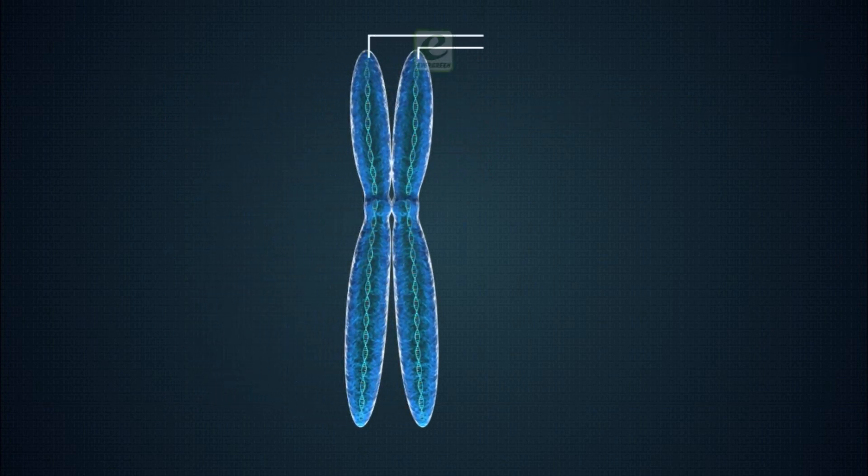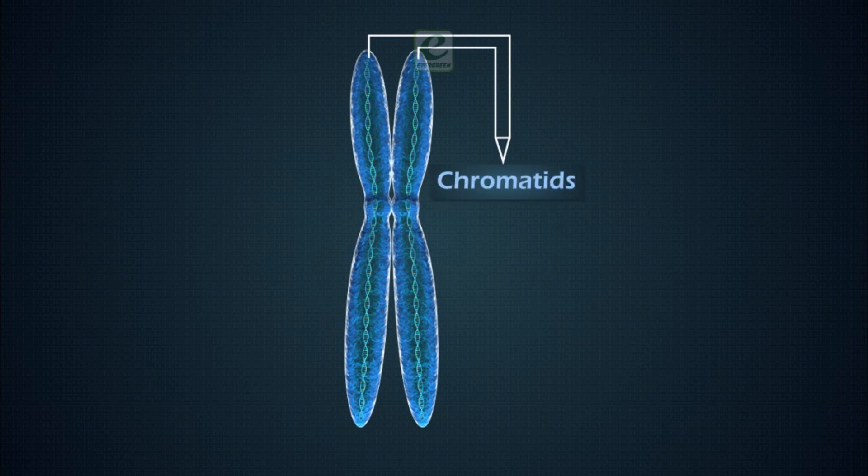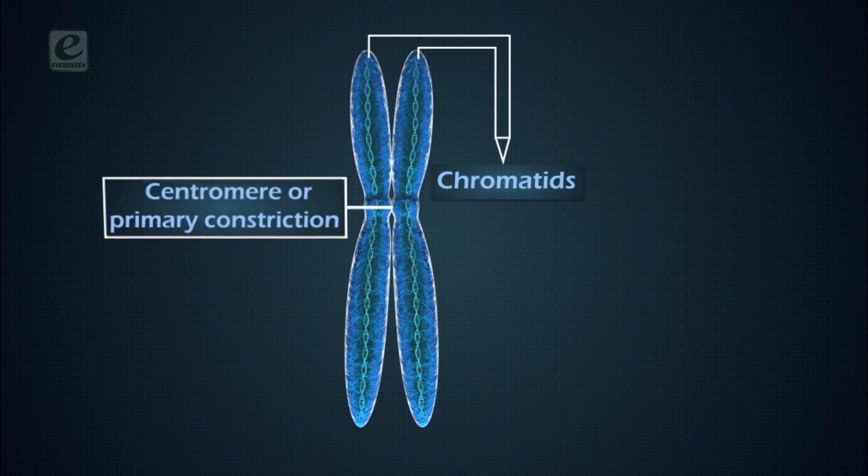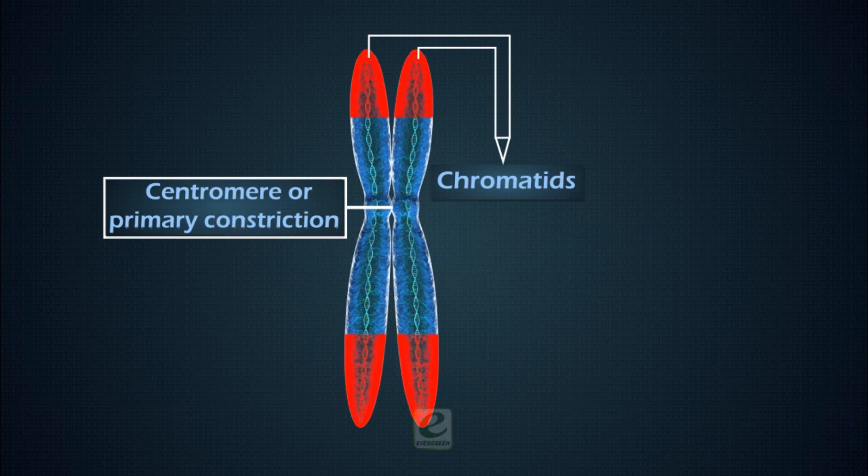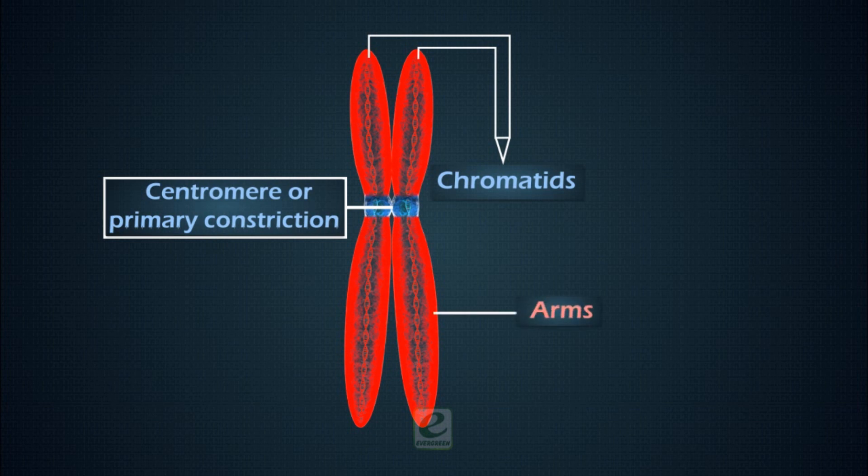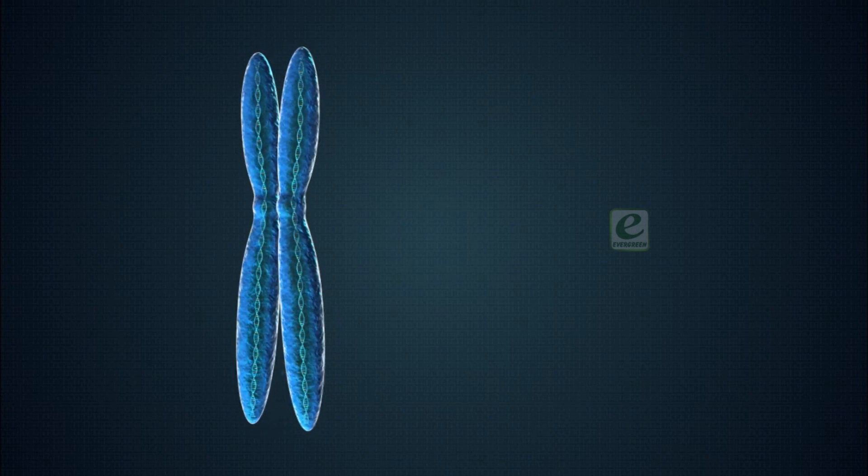The two chromatids are joined together at a point called centromere or primary constriction. Parts of chromatids on the two sides of centromere are called arms. In each chromatid is present a highly coiled thread of DNA and proteins called chromonema.